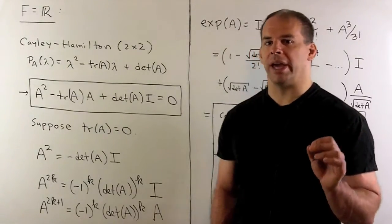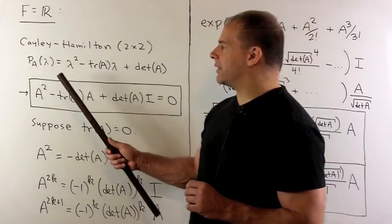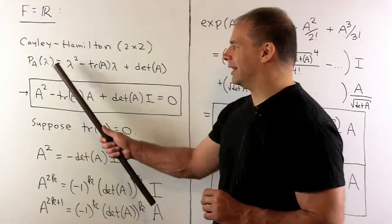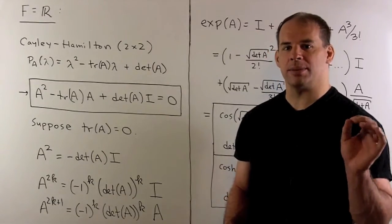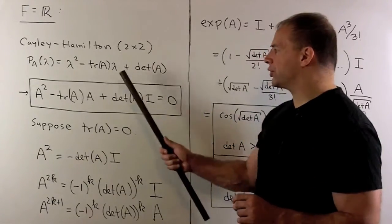So if we have a two-by-two matrix, we'll always have the characteristic polynomial in lambda. It's going to be equal to lambda squared minus the trace of A times lambda plus the determinant of A.